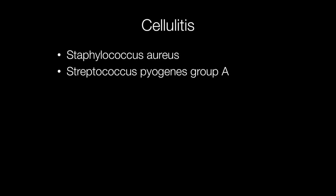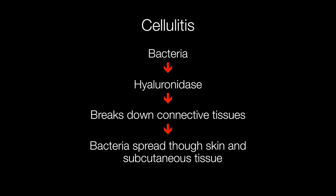The two bacteria that cause most cases of cellulitis are Staph aureus and Streptococcus pyogenes Group A. What is special about these bacteria is that they produce an enzyme called hyaluronidase, which dissolves or breaks down the connective tissues, allowing the bacteria to spread through the skin and subcutaneous tissue.